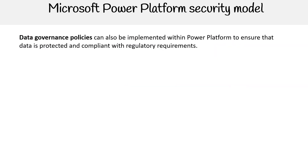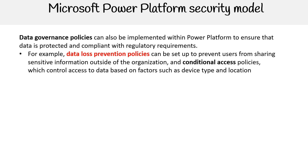Data governance policies can also be implemented within Power Platform to ensure that data is protected and compliant with regulatory requirements. For example, data loss prevention policies can be set up to prevent users from sharing sensitive information outside of the organization, and conditional access policies can control access to data based on factors such as device type and location.